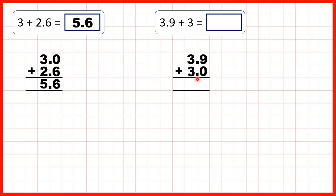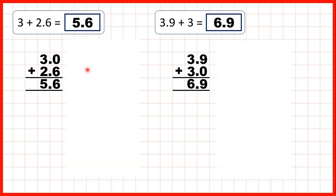We can copy down the decimal point into our answer. Nine plus zero is nine and three plus three is six, so our answer is 6.9.